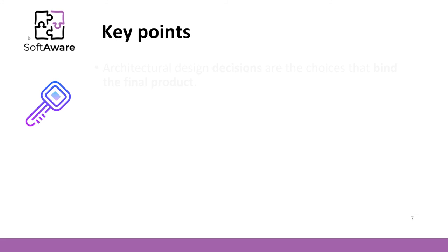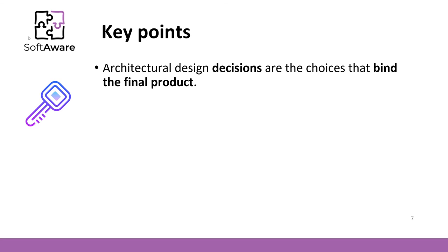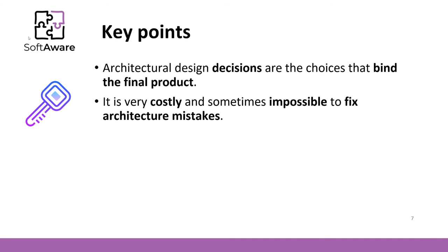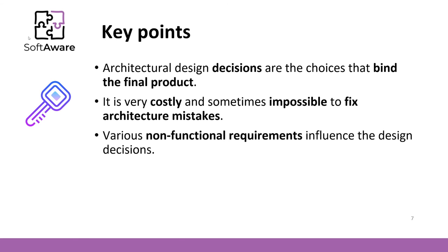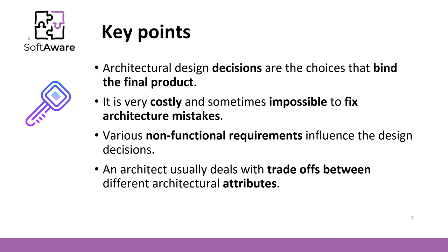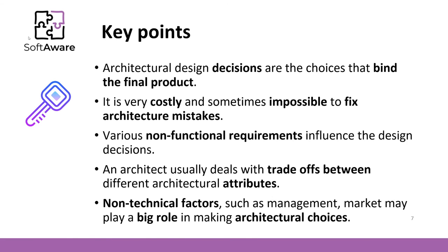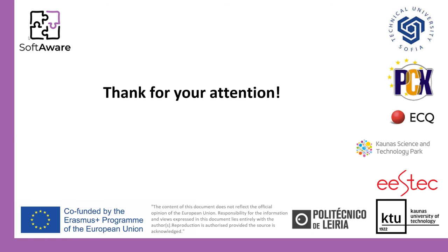Let's summarize this lecture. Architectural design decisions are the choices that bind the final product — it is very costly and sometimes impossible to fix design mistakes. Various non-functional requirements influence design decisions, and an architecture usually deals with trade-offs between different architectural attributes. Non-technical factors such as management and the market may also play a big role in making architectural choices. If you are going to become a software engineer, you will probably have to make architectural decisions — be sure to find appropriate ones.